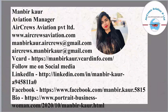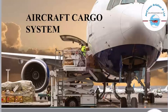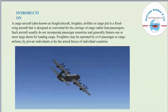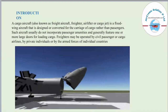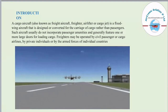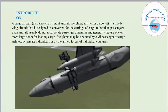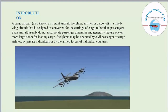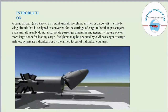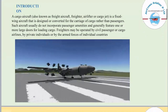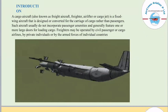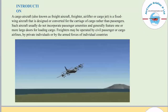Today I will be talking about aircraft cargo systems. An aircraft cargo, also known as a freighter, airlifter, or cargo jet, is a fixed-wing aircraft designed or converted for the carriage of cargo rather than passengers. Such aircraft usually do not incorporate passenger amenities and generally feature one or more large doors for loading cargo. Freighters may be operated by civil passenger or cargo airlines, by private individuals, or by the armed forces of individual countries.